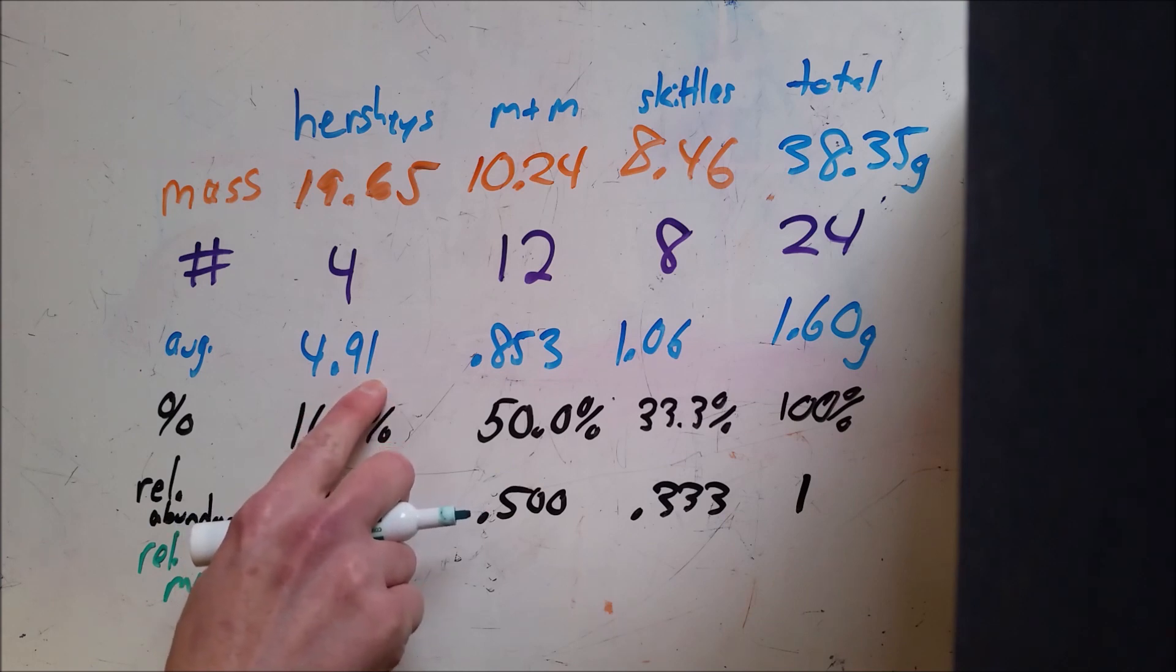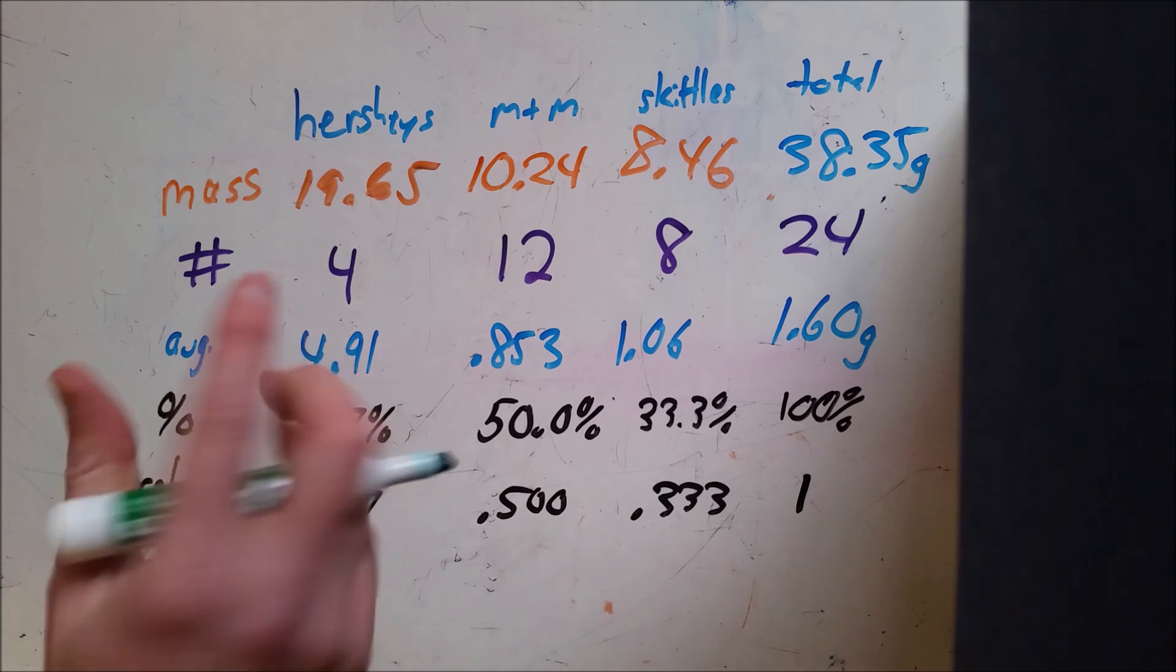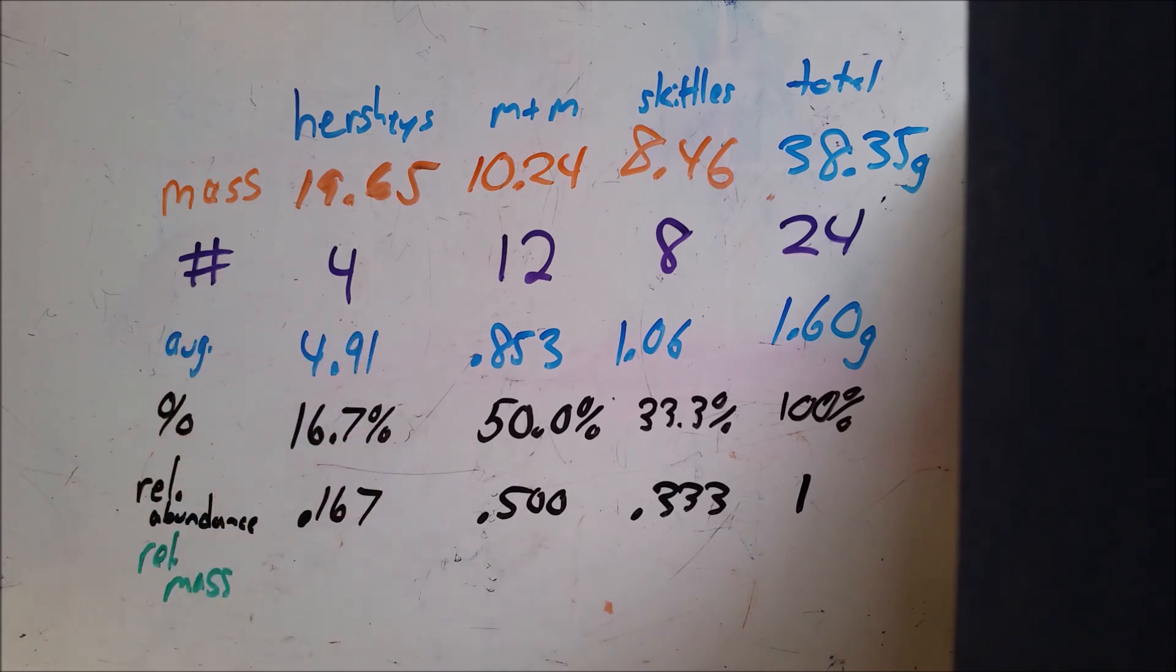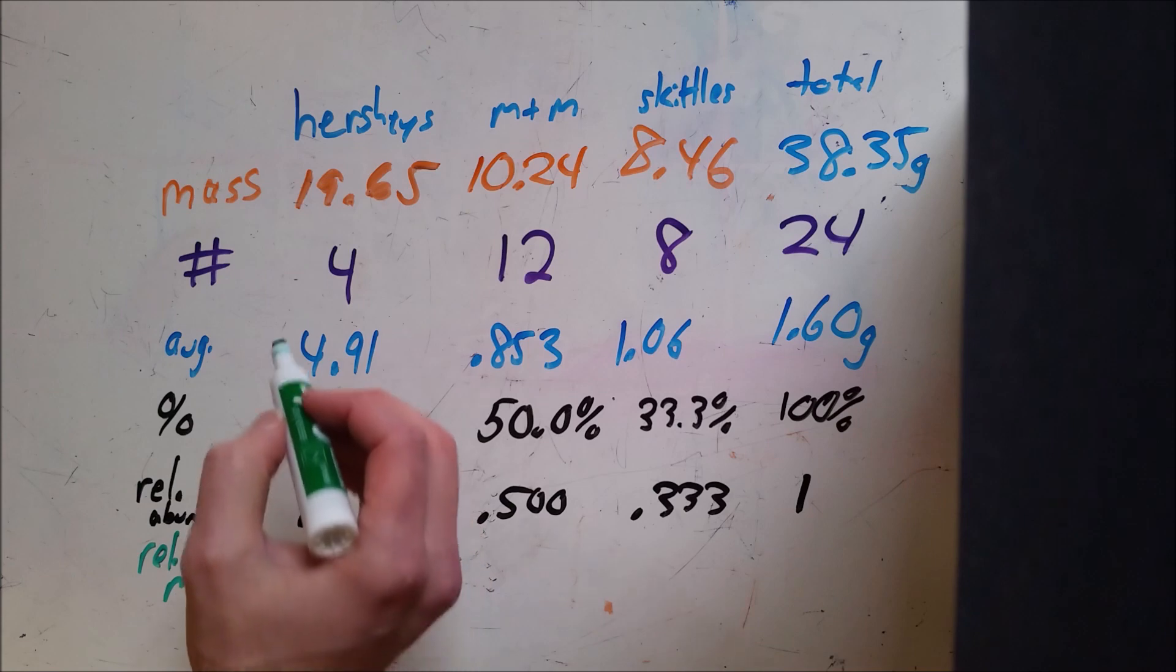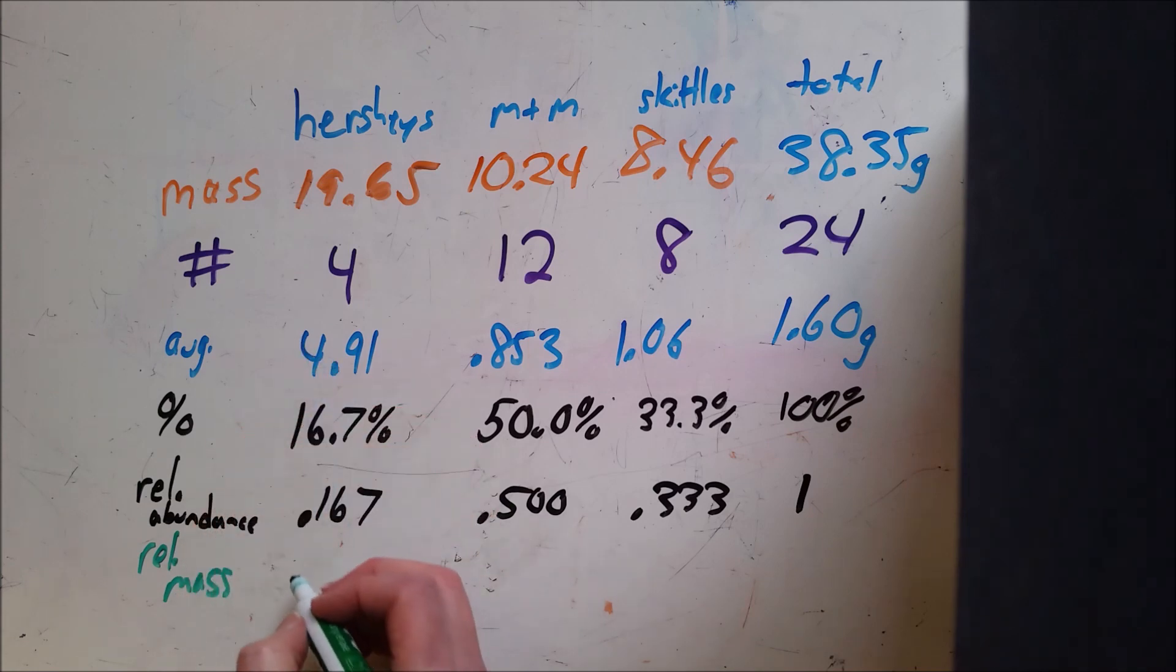we're going to use our average here. For something like an isotope, all isotopes would be identical. For the candy it's not exactly that but it's close enough. So we're going to take 0.167 and multiply it by that 4.91 and it comes out to 0.820.